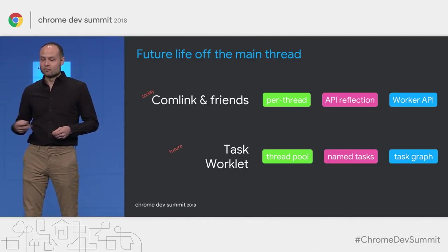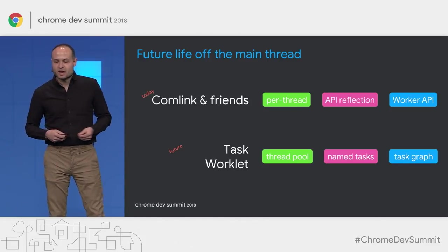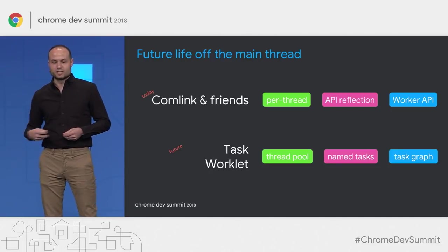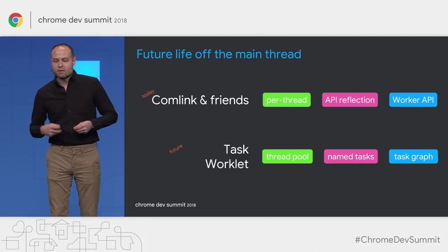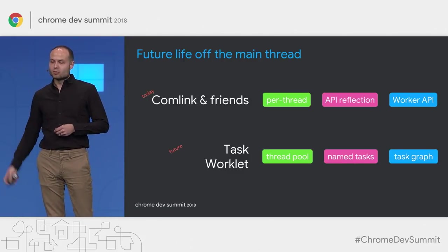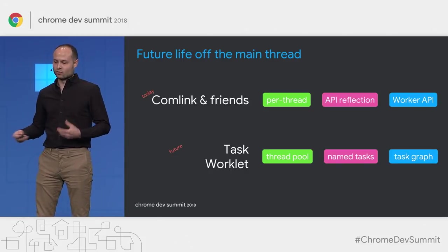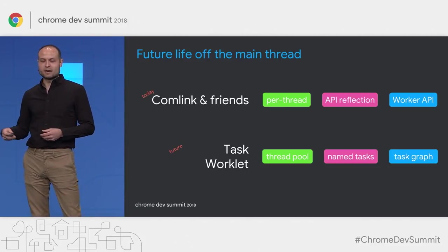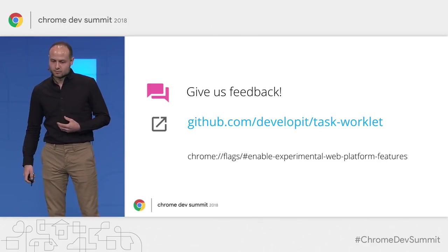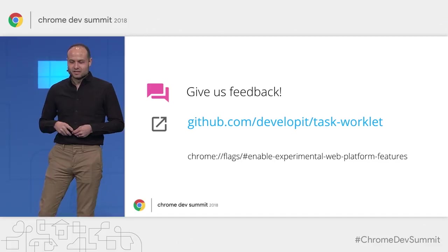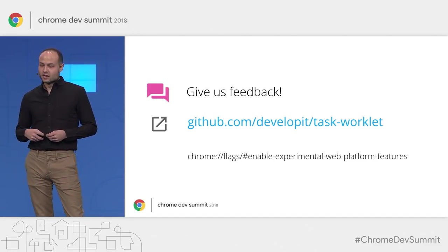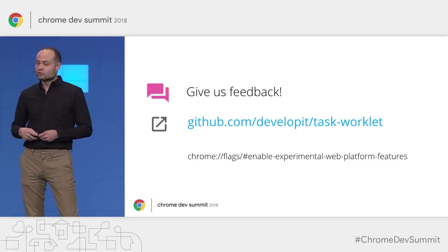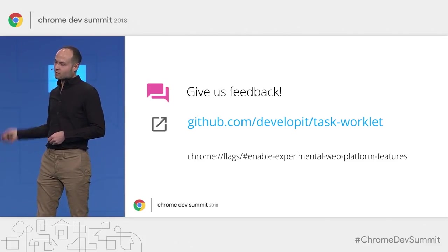Task Worklet is backed by a thread pool. When you post a task with data as its argument, it will attempt to run on the thread where that data is already available, so data is never transferred between threads. If no optimal thread is available, it will transfer data to achieve parallelization. If the result needed is just a single integer — like a comparison of cat versus dog photos — only that integer is ever transferred back to the main thread, which is extremely cheap. We've been thinking about the future of off-main-thread web development: today we have libraries like Comlink using reflection, but in the future we envision a Task Worklet model with an automatically managed thread pool, named tasks, and a task graph that optimizes execution and data flow. An implementation is available in Chromium behind the experimental web platform features flag, with a polyfill and demos on GitHub.